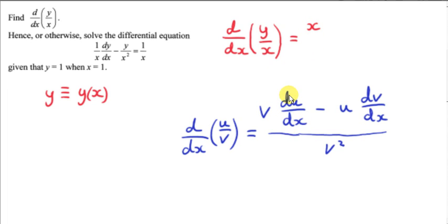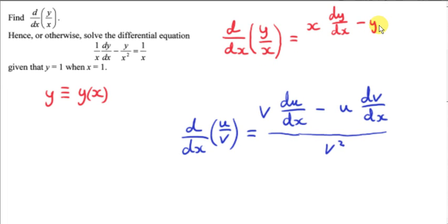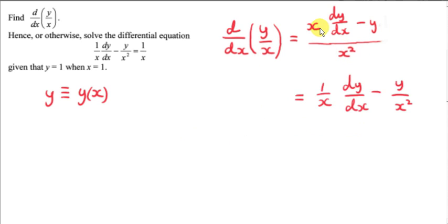We multiply by the derivative of the numerator, so that's dy/dx — whose derivative we can't find because we don't know y as a function of x. Next, we subtract u, which is the numerator, multiplied by the derivative of what's underneath. If we differentiate x with respect to x, we just get 1. Finally, we divide everything by v squared, that's x squared. We can divide both terms on top by x squared to get (1/x)(dy/dx) minus y/x².